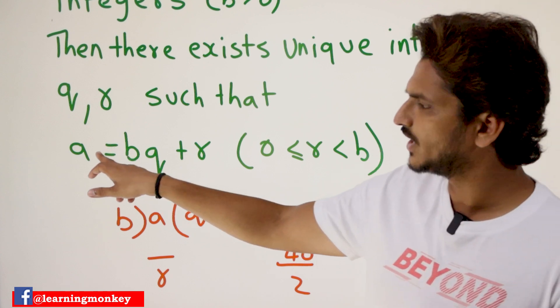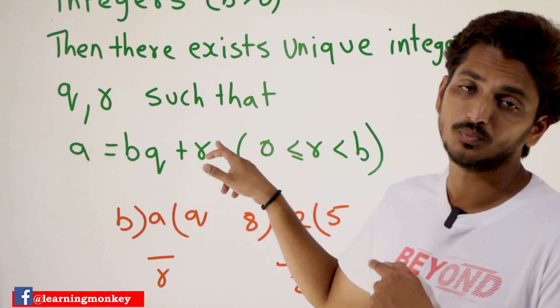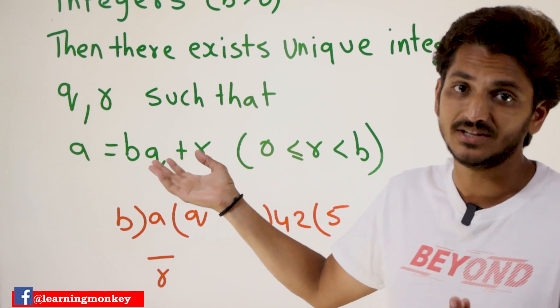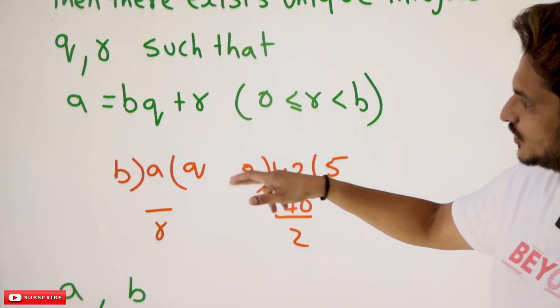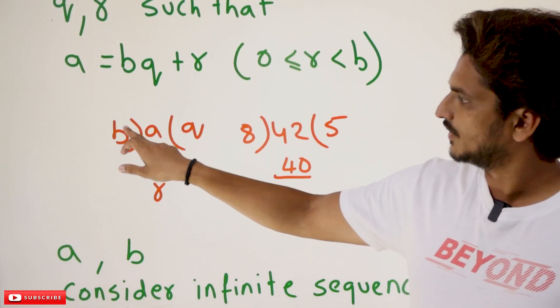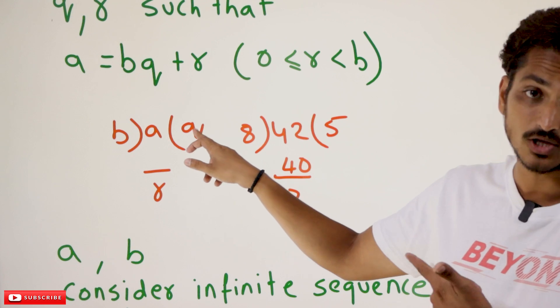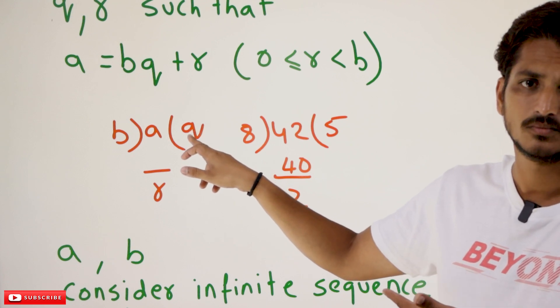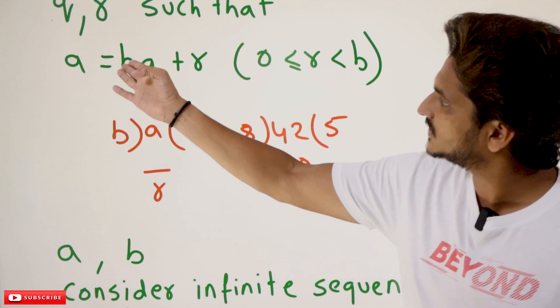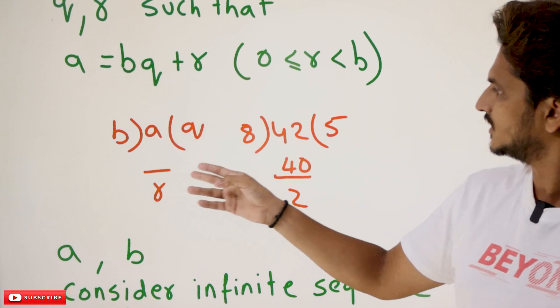Don't get confused how we have written this. A equals BQ plus R is just the division algorithm, the basic division formula. Let's try to refresh that. If you take A divides by B, B multiplied by Q, here you are going to get quotient value and here you are going to get remainder value. That is what this equation says.